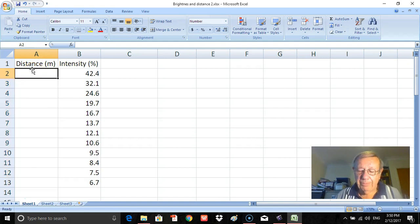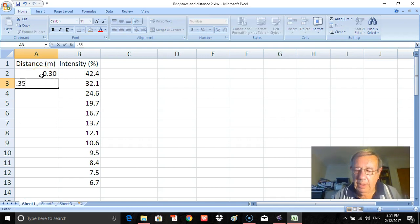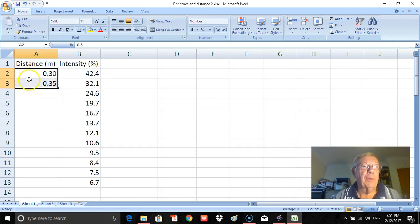Now first of all I'll put in 0.3 meters, press enter, and again 0.35 for our next reading. To make life easier I'll just select those two, put my pointer over here on this square, this black square on the corner, and pull down until I get to 85 centimeters or 0.85 meters.